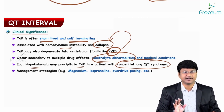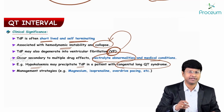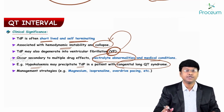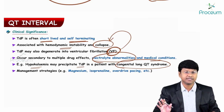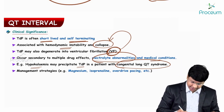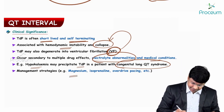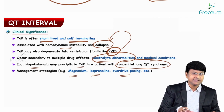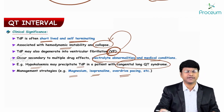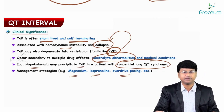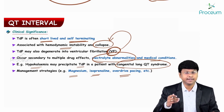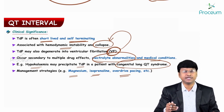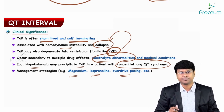Regarding management strategies for torsades de pointes: you need to give one gram of magnesium sulfate intravenously, isoproterenol, and overdrive pacing. These are the treatment options to incorporate when a patient presents with torsades de pointes. Next, consider the pathophysiology of torsades de pointes.